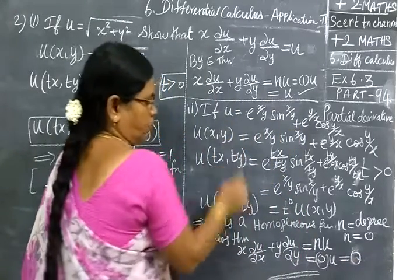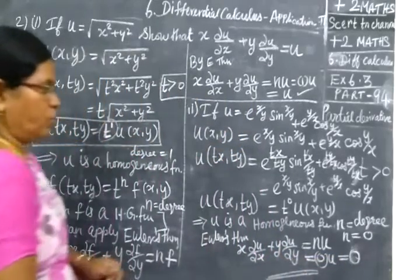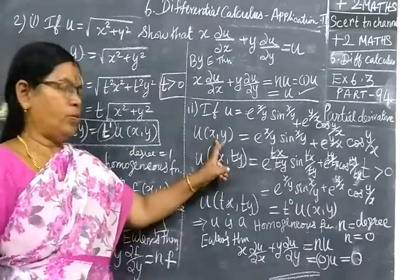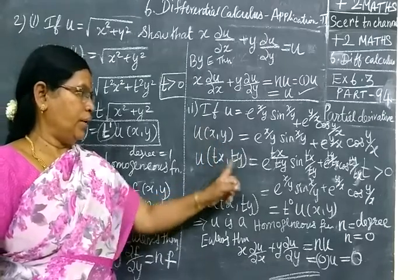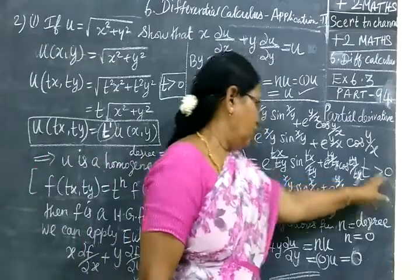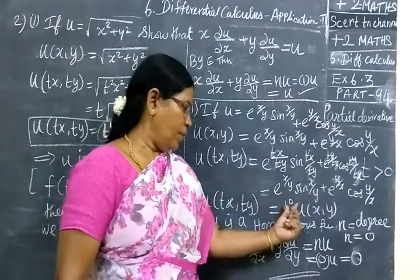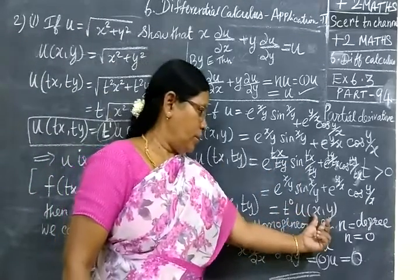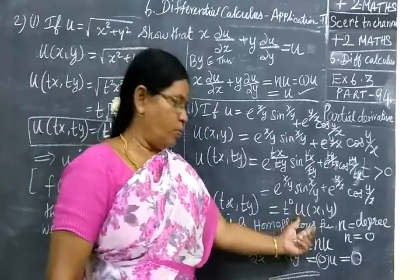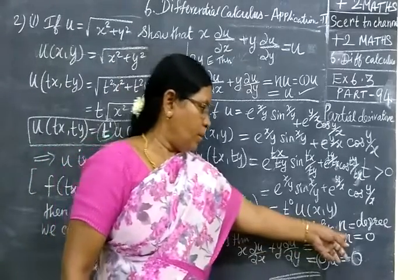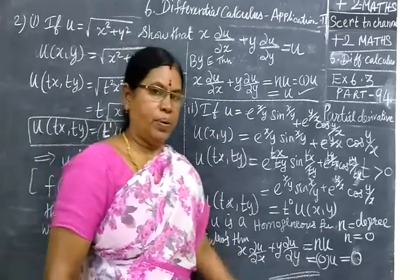If you want to apply Euler's theorem, the result is equal to 0. So for this function we apply Euler's theorem and get x into ∂u/∂x plus y into ∂u/∂y equal to 0. This is the form of Euler's theorem applied to this original function.